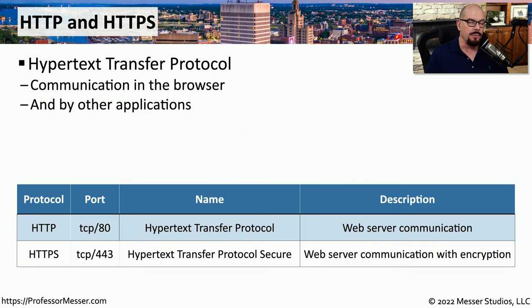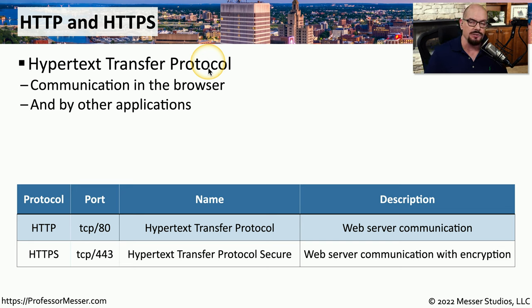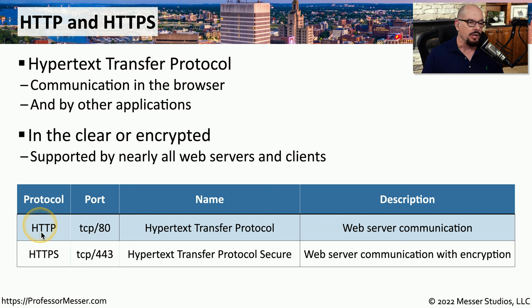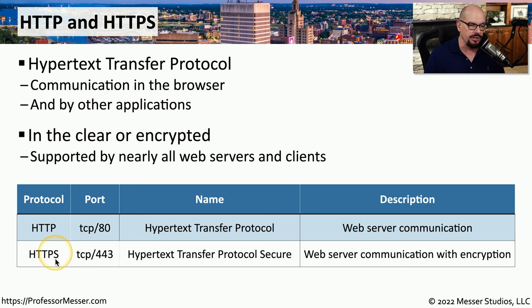If you've ever used a web browser, you've used HTTP and HTTPS. HTTP is the Hypertext Transfer Protocol, the common protocol used by browsers to communicate with web servers. There are two different protocols depending on the type of communication. If you're communicating in the clear, or in a non-encrypted form, you use HTTP, which uses TCP port 80. If your browser is communicating over an encrypted connection, it's probably using HTTPS — the S being for Secure — and that uses TCP port 443.